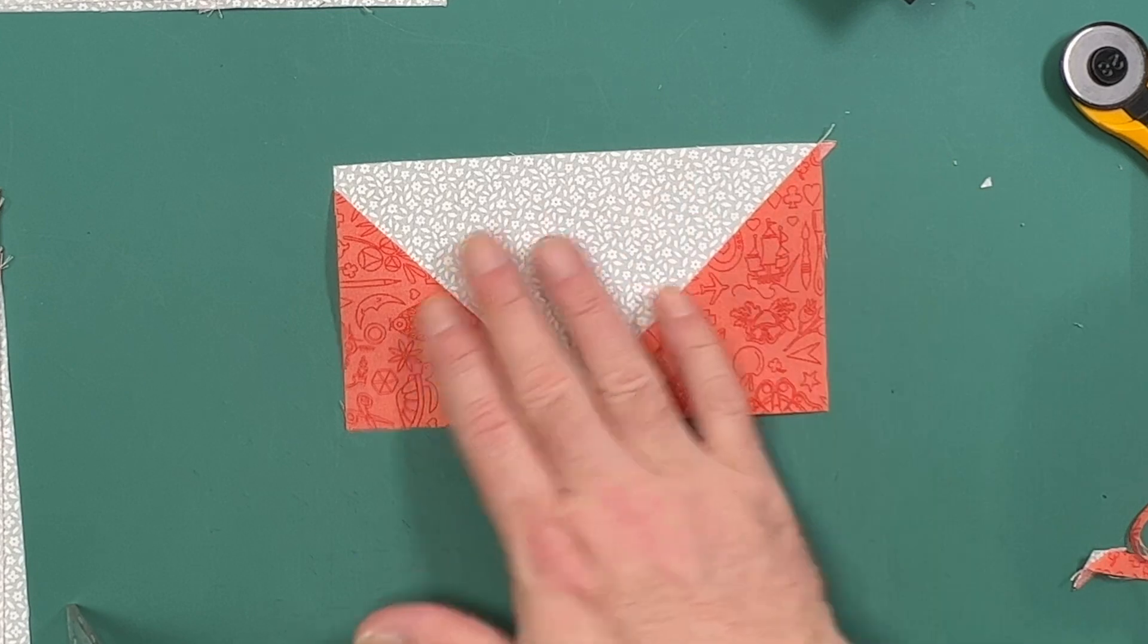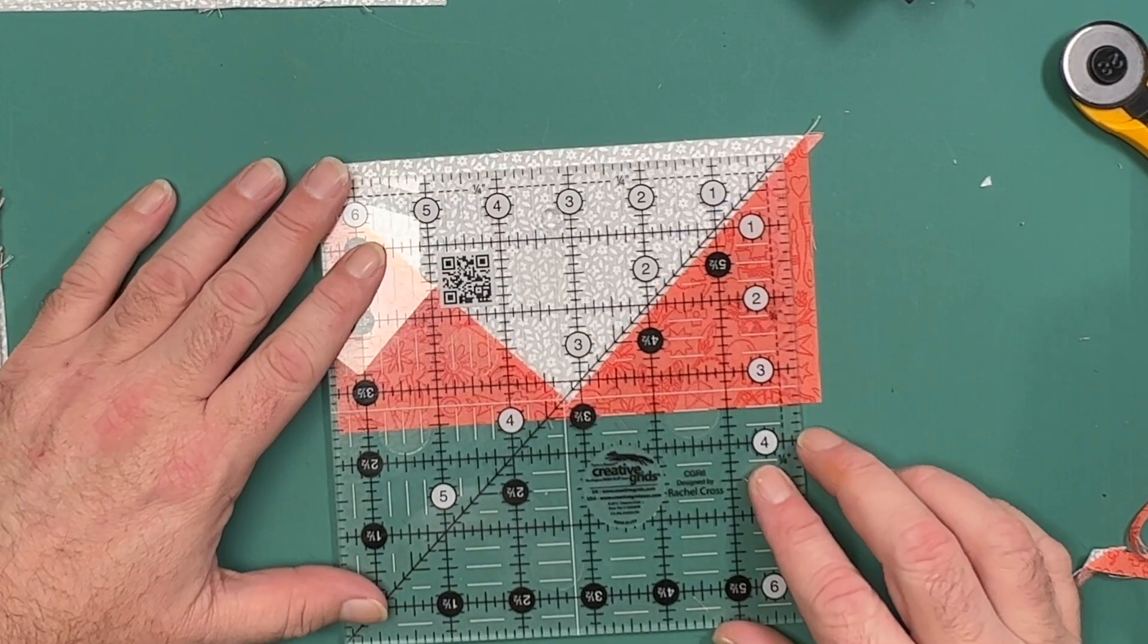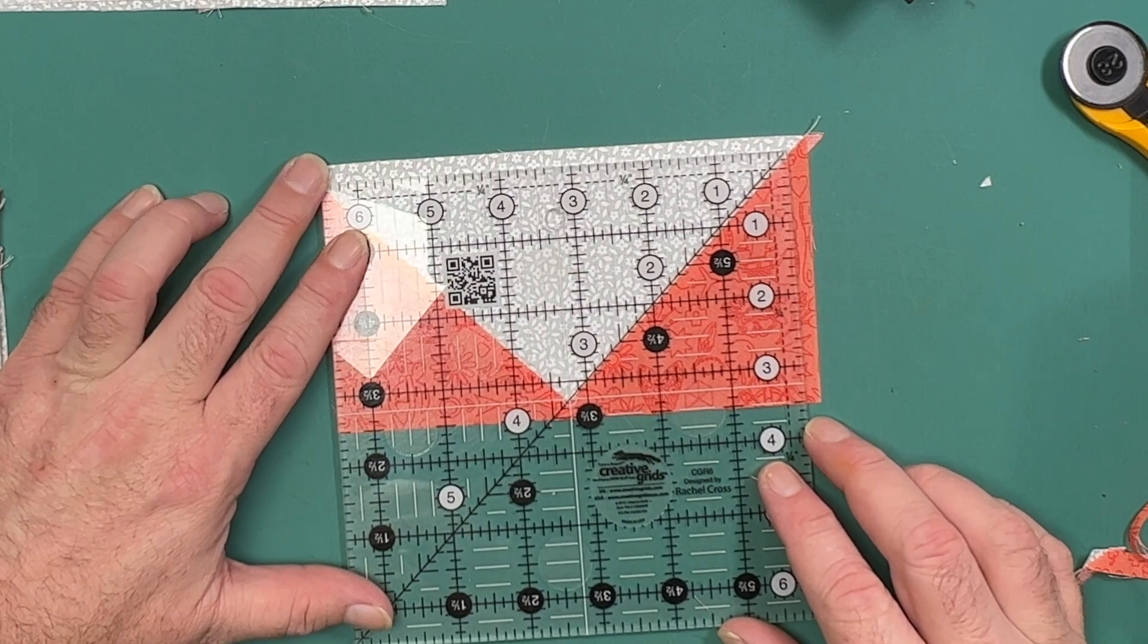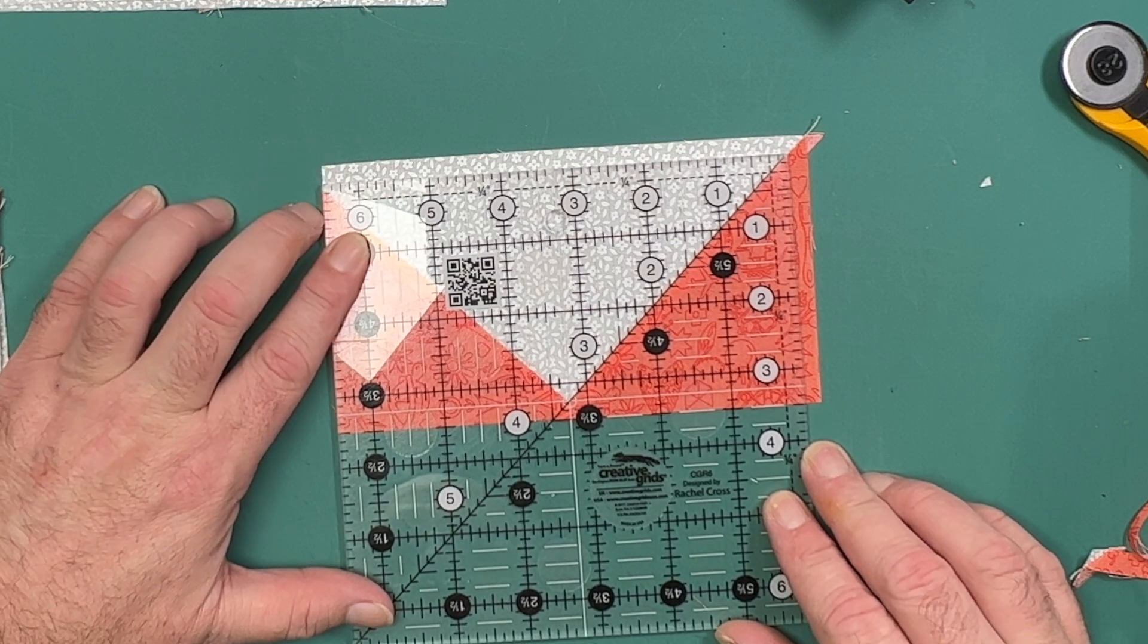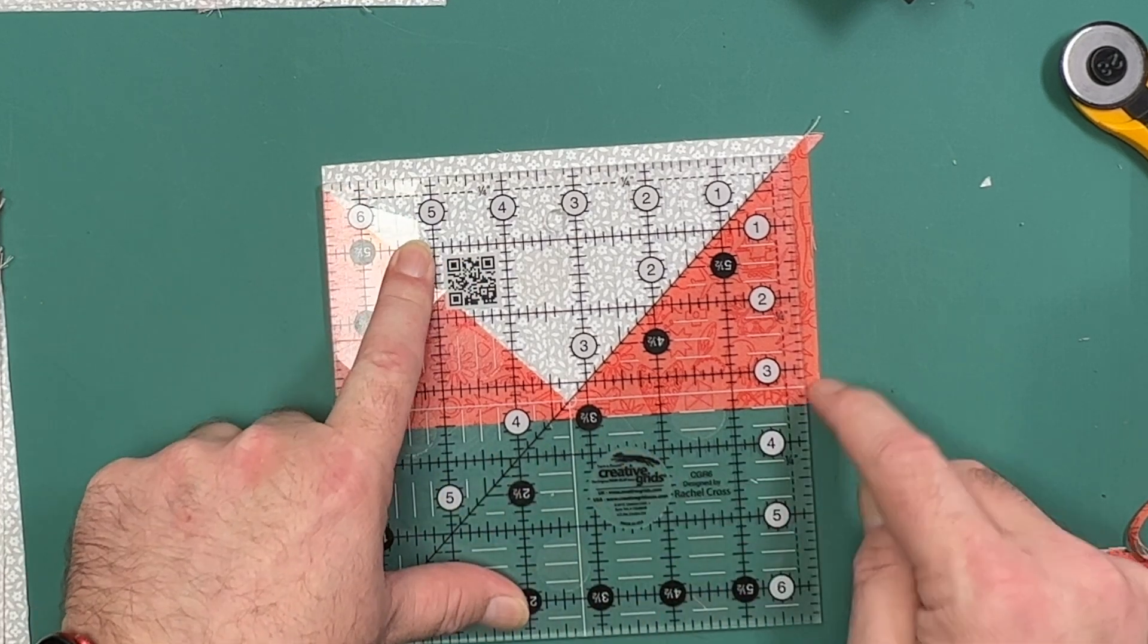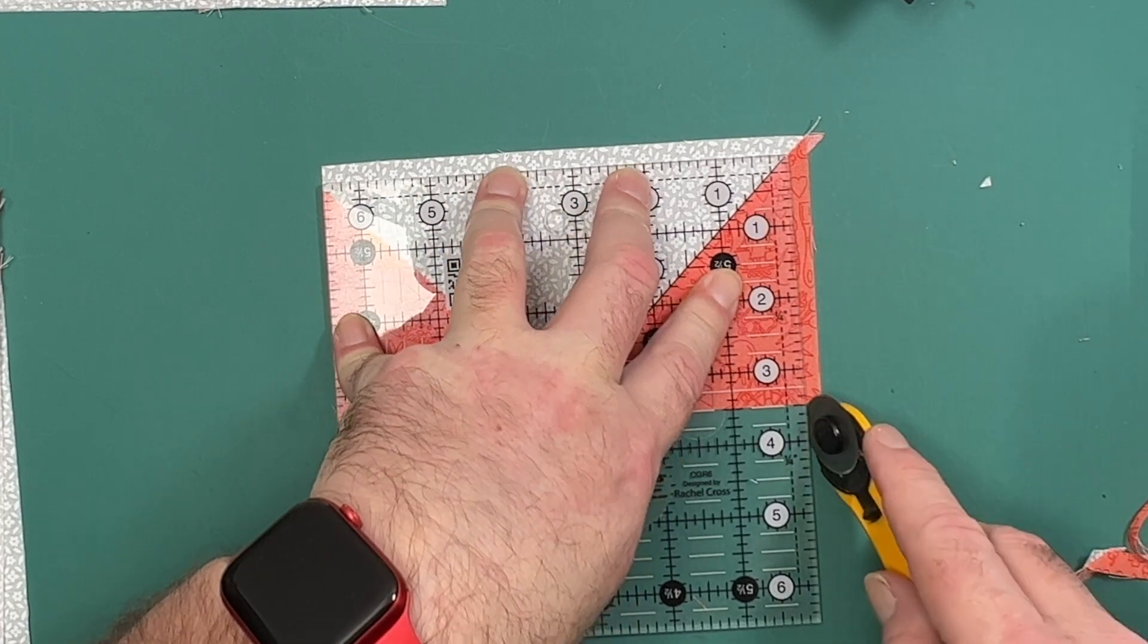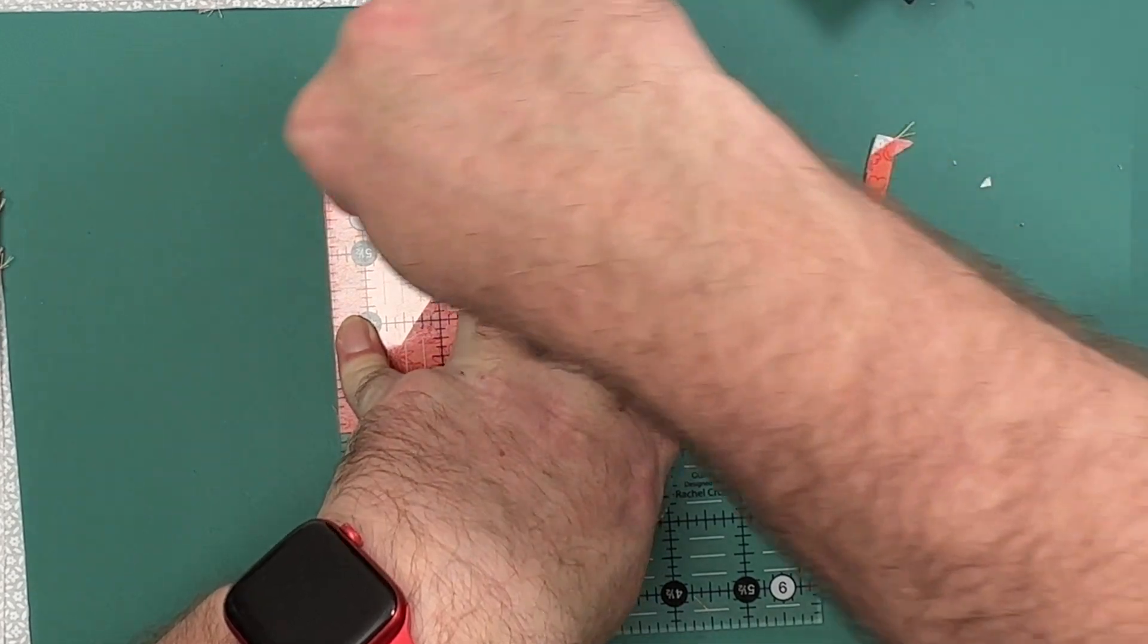Rotate the block and place the ruler back on. This time we can put our three and a half by six and a half around those outside edges. You will notice that my diagonal line or my 45 degree line in this instance on my square ruler there is going right across that leg of the flying geese. Then we can trim our final two sides. So trim all of your flying geese down and I'll meet you back for the next steps.